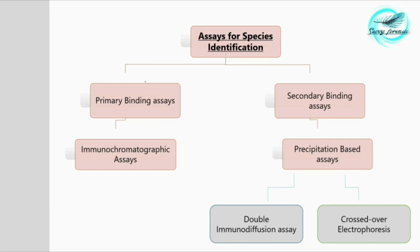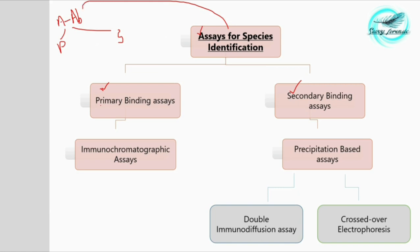Species identification assays are usually of two types: primary binding assays and secondary binding assays. The antigen-antibody reactions are of these two types. These assays are dependent on antigen-antibody binding reactions, where in the primary reaction a single epitope of an antigen and a single antigen-binding site of an antibody react to form an antigen-antibody complex.